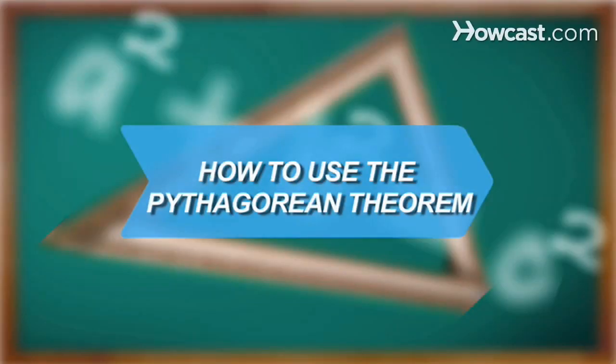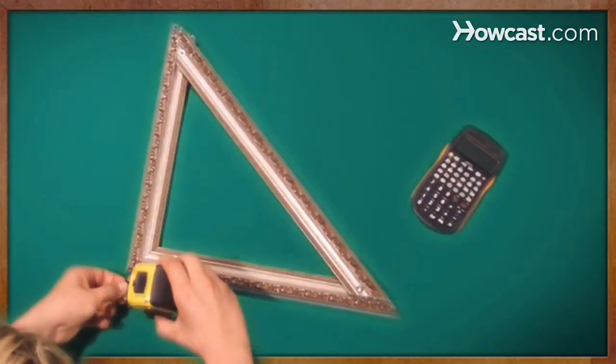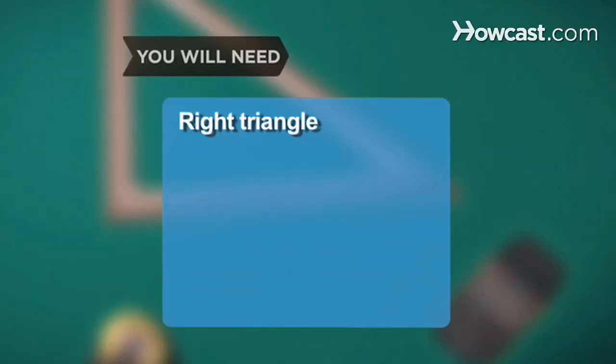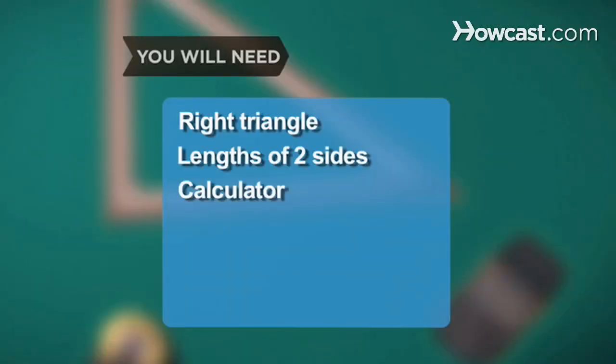How to Use the Pythagorean Theorem. The Pythagorean Theorem is a cornerstone of geometry. Here's how to use it. You will need a right triangle, the lengths of two sides, and a calculator.